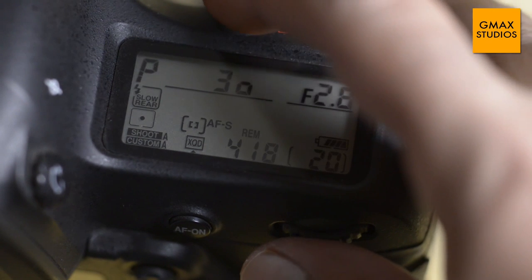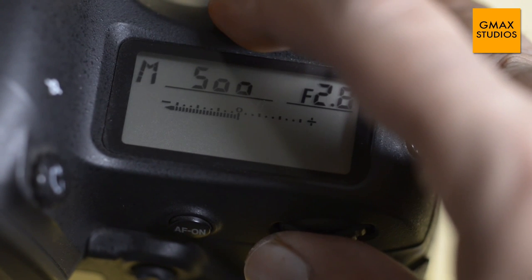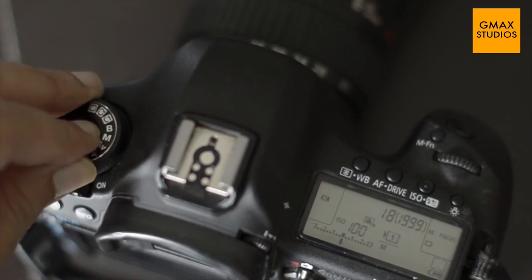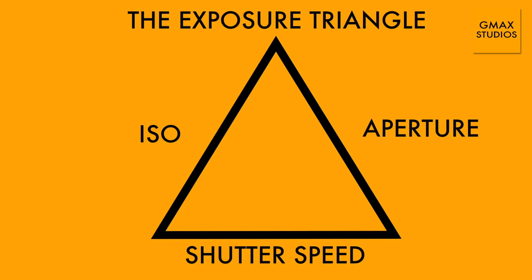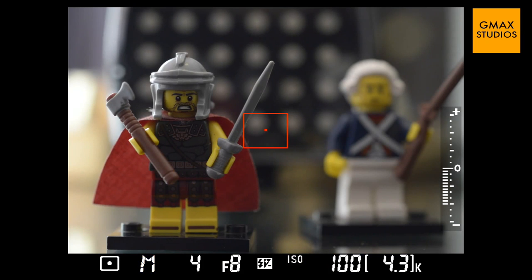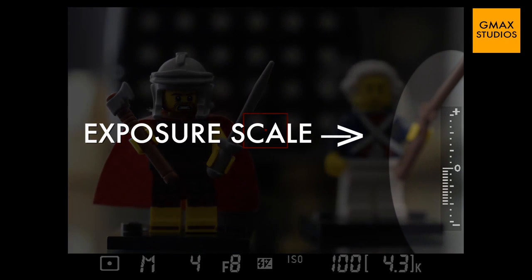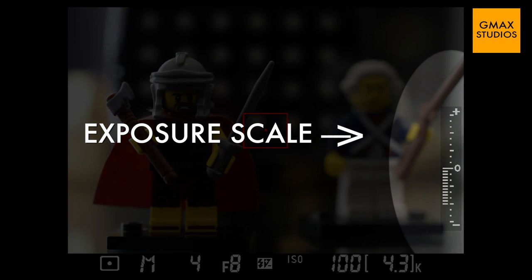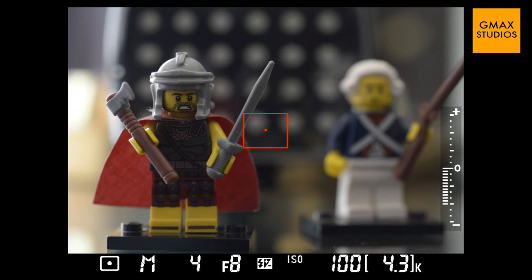We can switch to the manual mode by switching to M on a Nikon or on a Canon. As we have discussed in episode five, the three settings that make up a good exposure are aperture, shutter speed, and ISO. So let's take a look at this frame and switch our mode to manual mode. The most important thing to note here is the exposure value scale, which comes at the right-hand side of the screen. On some cameras, it might also come at the bottom of the screen.